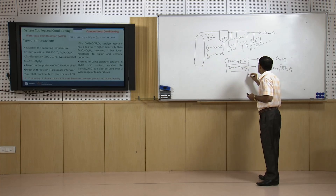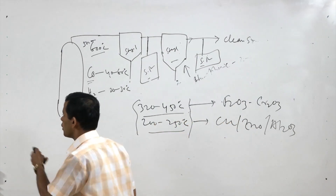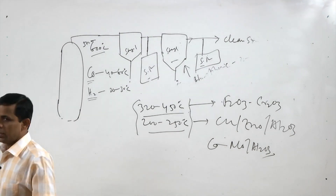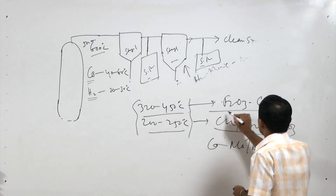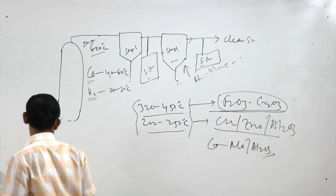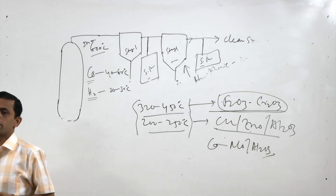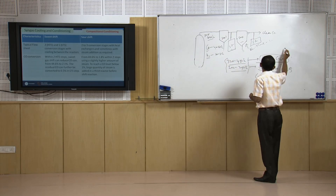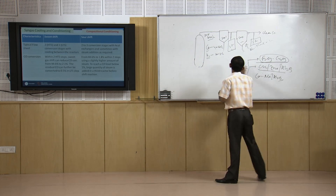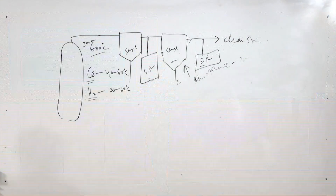A newer development in catalyst technology has given a cobalt-molybdenum/Al2O3 catalyst which can be used over a wider range. Comparing the two catalysts, Fe2O3/Cr2O3 has relatively lower selectivity, whereas Cu/ZnO/Al2O3 has higher selectivity for hydrogen production; however, Cu/ZnO/Al2O3 has lower resistance to sulfur and chloride impurities. To achieve conditioning of the syngas, we may use sweet shift or sour shift reactions, but both require both high and low temperature shift stages.